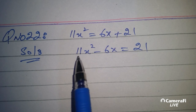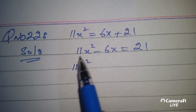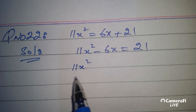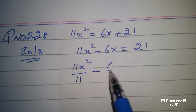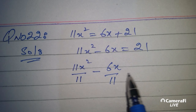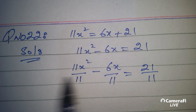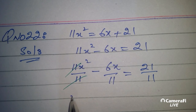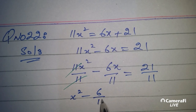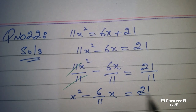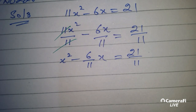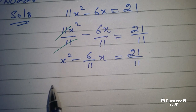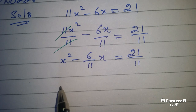What we have to do is: in x squared, whatever number is written — i.e., the coefficient — it must become one. Whatever it is, divide all terms by it. All terms will cancel here. We have to write x² minus 6 over 11 x, and here we have to write 21 over 11.